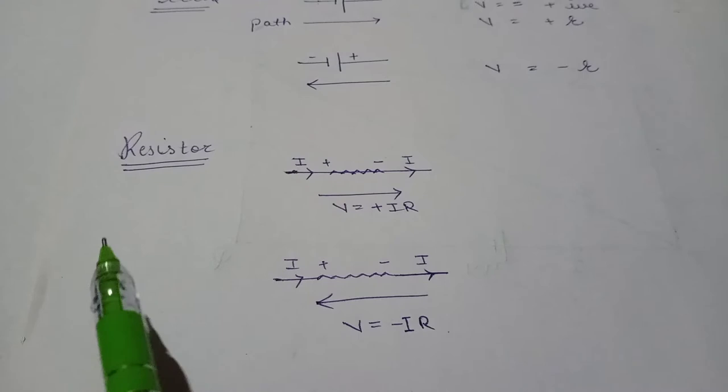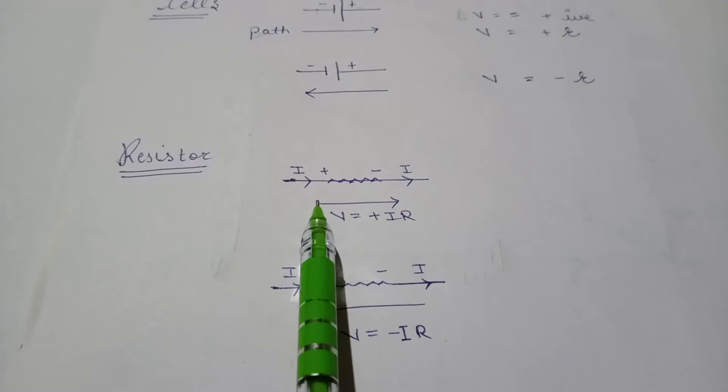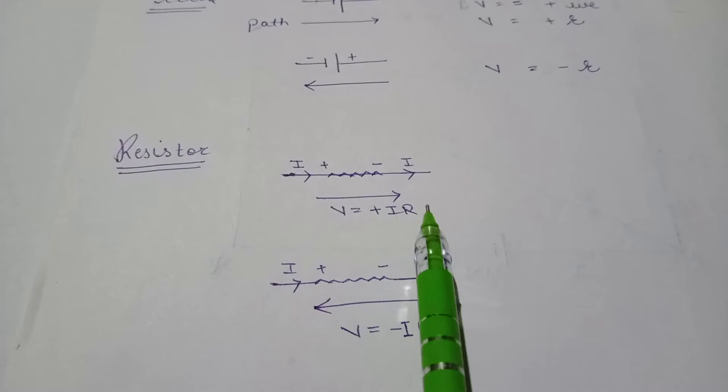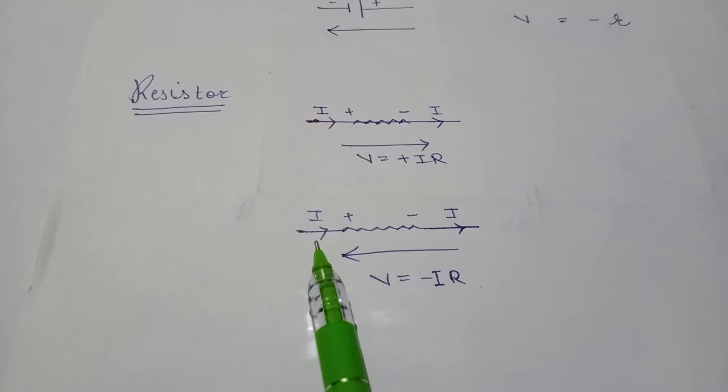In case of a resistor, we already know that current flows from higher potential to low potential. And if our direction is also in the direction of current — means our path is the same as the direction of current — in that case we will take the potential drop as positive, the product of current into resistance.